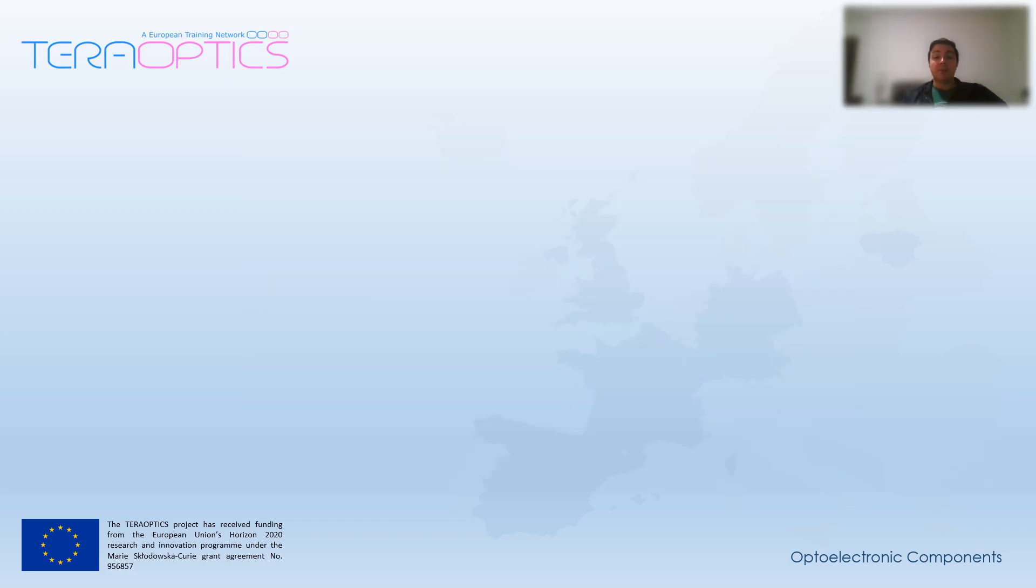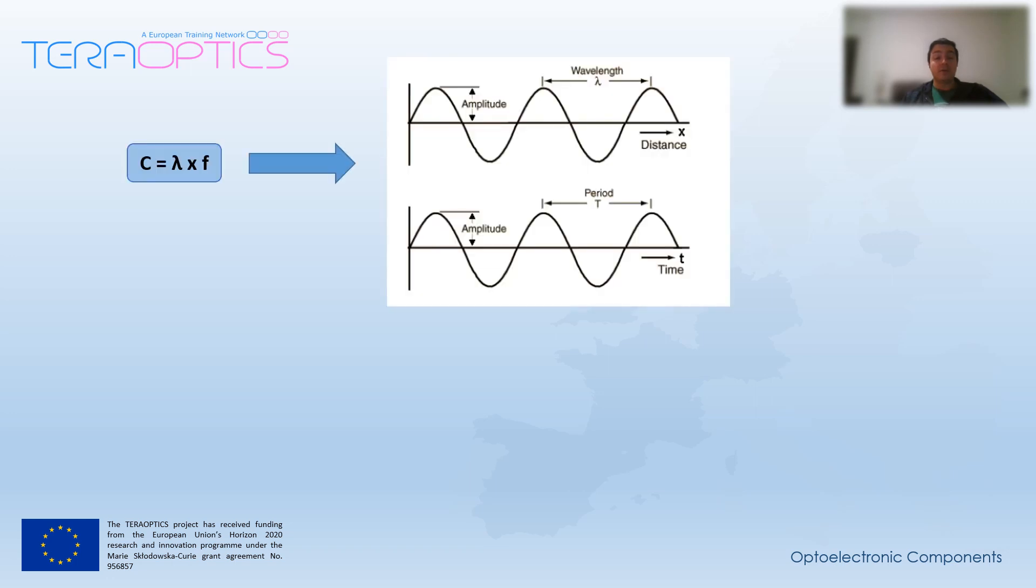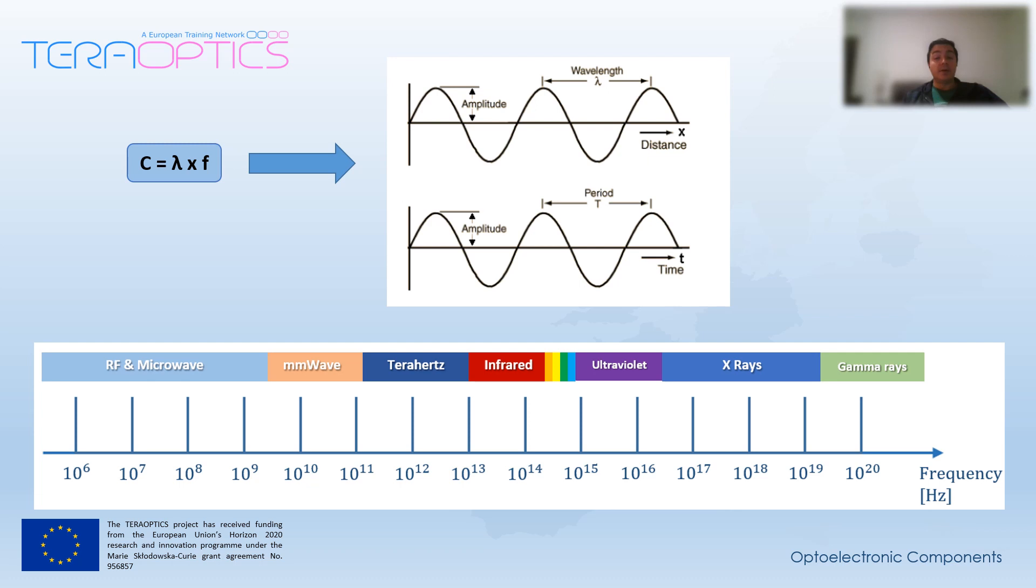Now, once we have obtained the value of the speed of the wave, we can also see the relationship between each frequency and its wavelength. In the range of frequencies of this electromagnetic radiation, we can obtain the so-called electromagnetic spectrum, where each band has different characteristics and applications. As we have seen in other video lectures, we are especially interested in the Terahertz band.